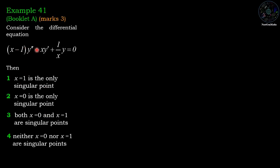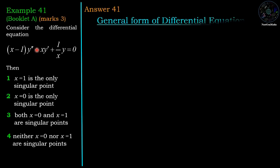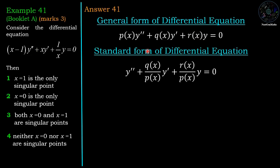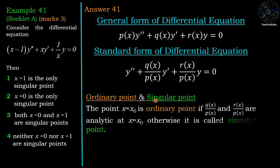This problem is about singular points of a differential equation. The general form is P(x) y'' + Q(x) y' + R(x) y = 0. Converting to standard form by dividing by P(x), a point x = x₀ is an ordinary point if Q(x)/P(x) and R(x)/P(x) are analytic there; otherwise it is a singular point. That means if at least one of them is non-analytic, the point is a singular point.